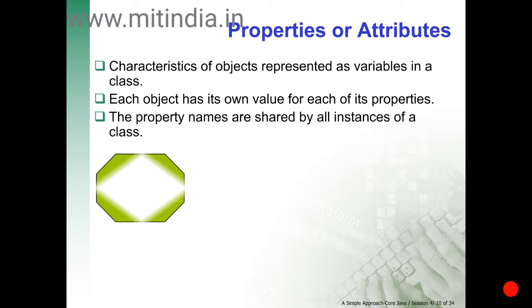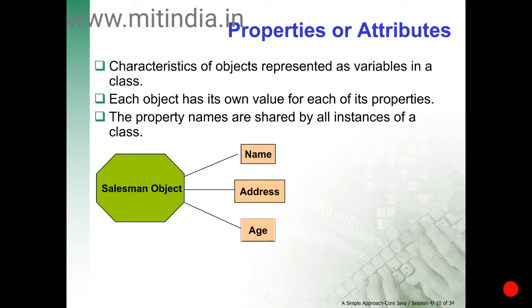Properties and attributes: Characteristics of an object are represented as variables in a class. For example, salesman is an object which comprises three properties: name, address, and age.